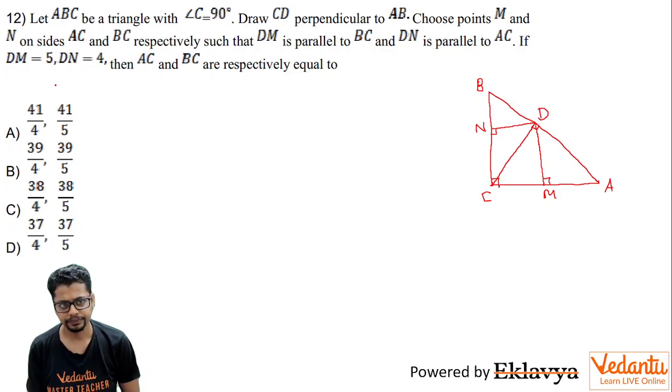So here, this is a rectangle CMDN where DM is 5 and DN is 4. So that means this is 4 and this is 5, being a rectangle as you can clearly see. Let's say this length is alpha and let's say this length is beta.